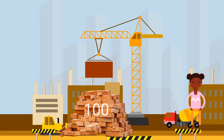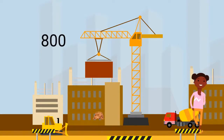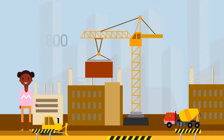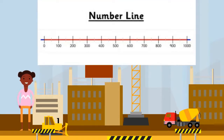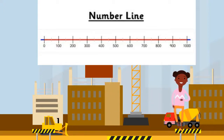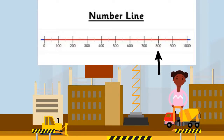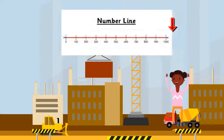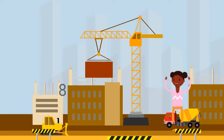There were 800 bricks delivered today but they need 100 more. Do you know what 100 more than 800 is? I like to visualize a number line to think about 100 more. This number line is showing 100s — it counts from 0 to 1000. Can you find 800 on the number line? That's right, 100 more than 800 is 900. The construction crew needed 900 bricks.